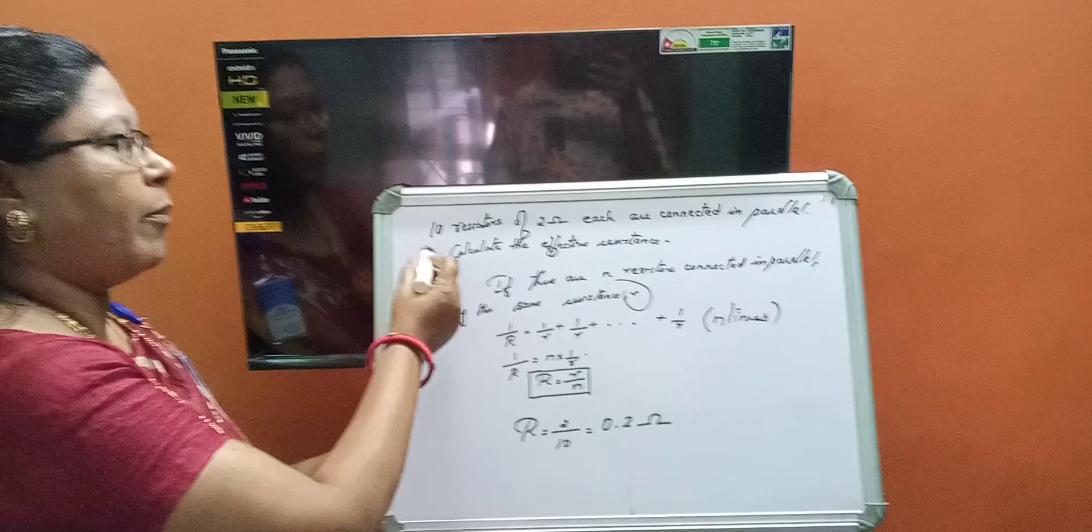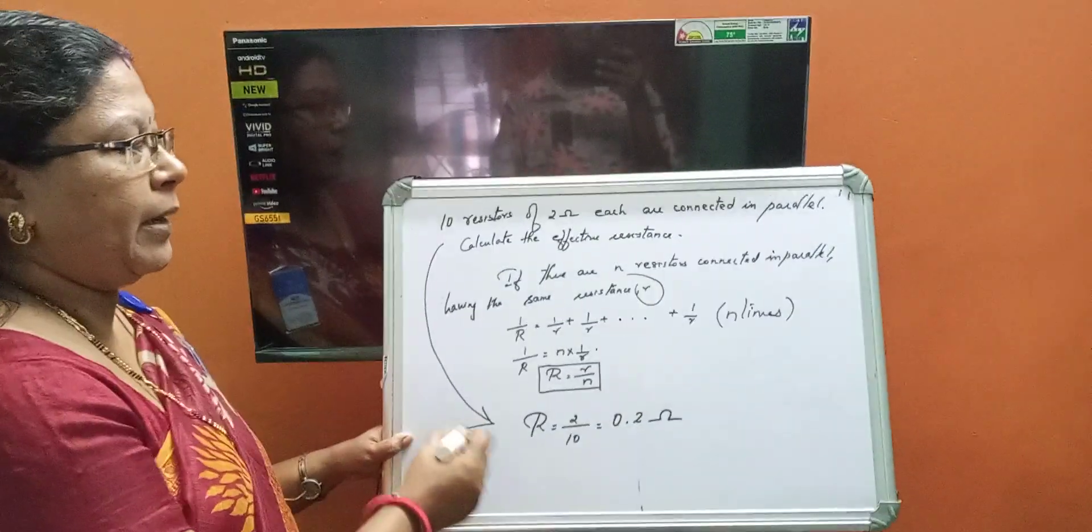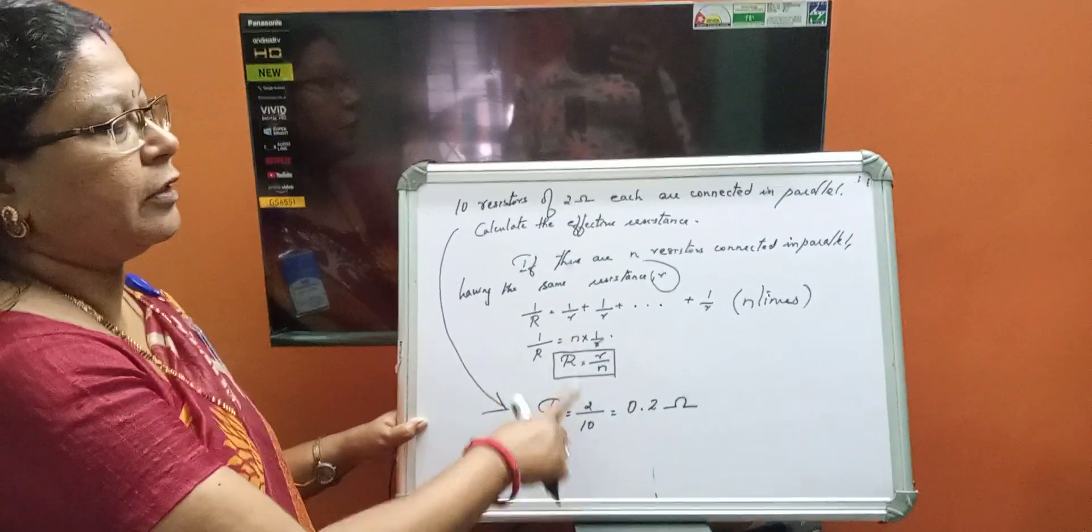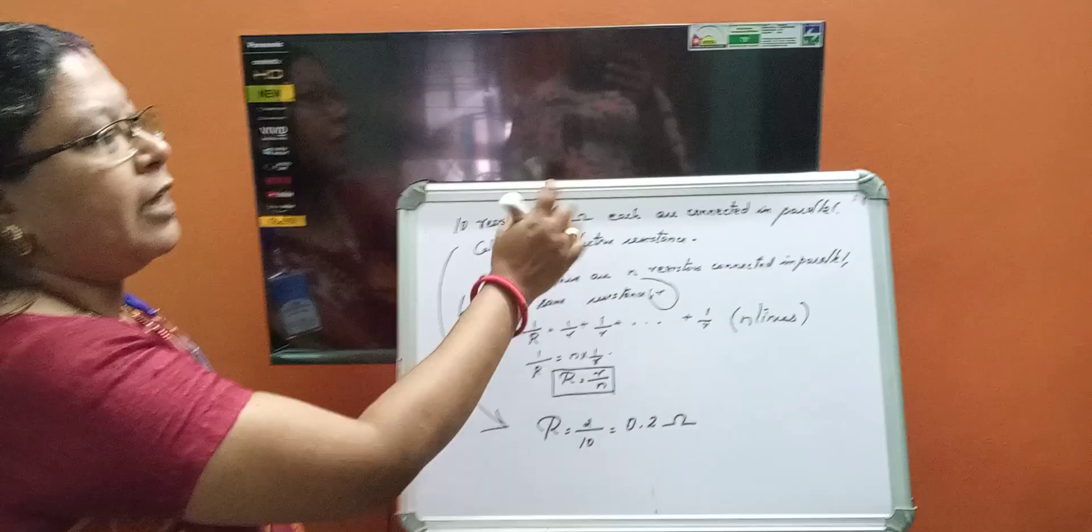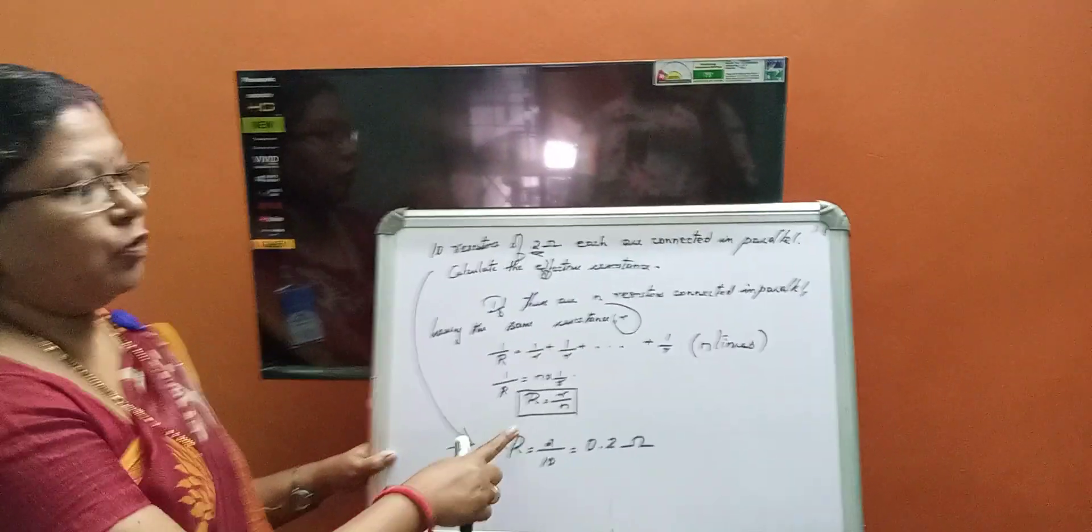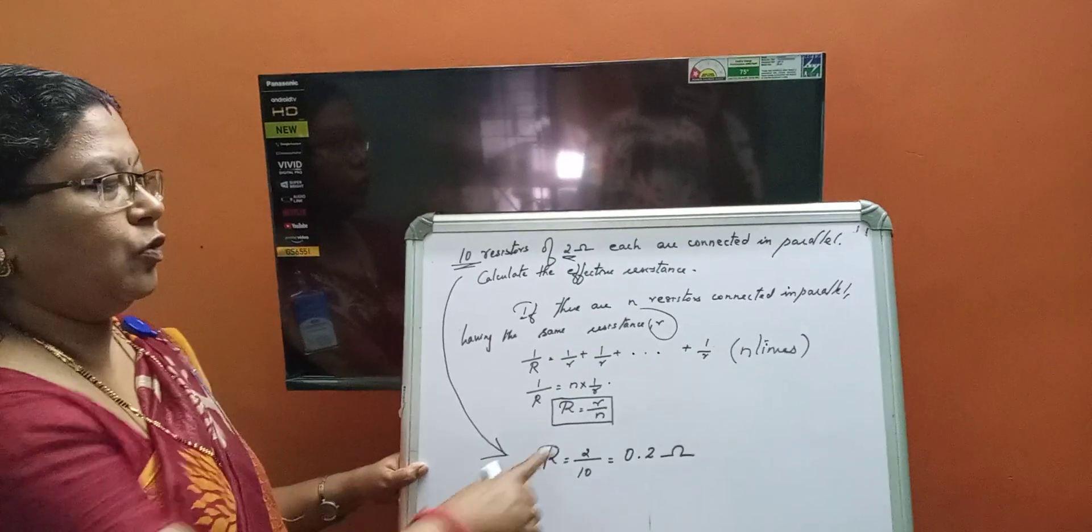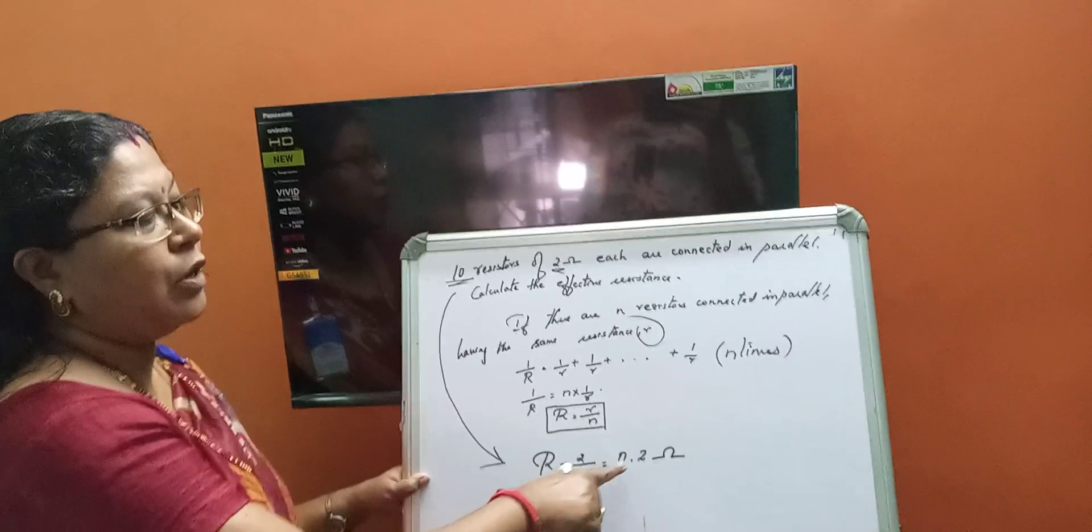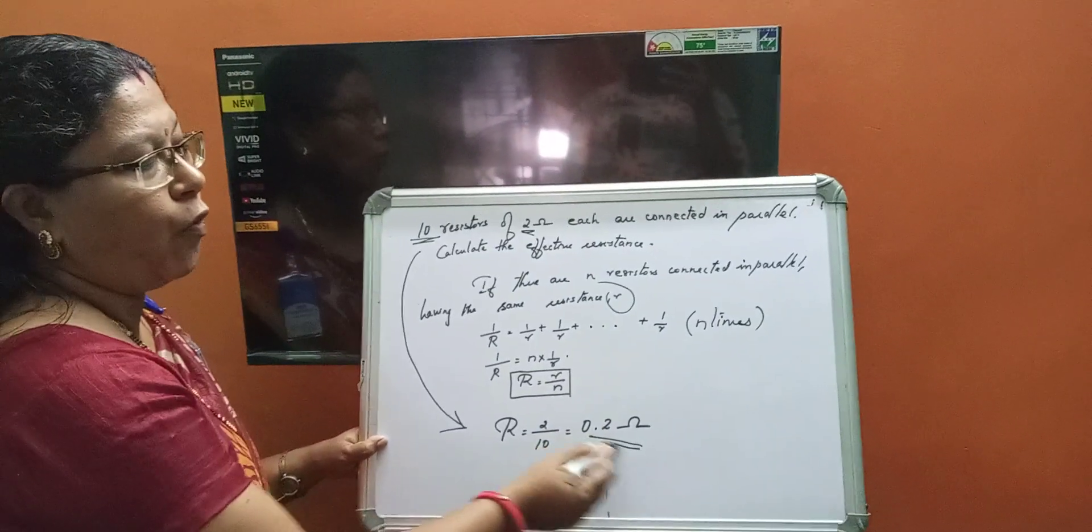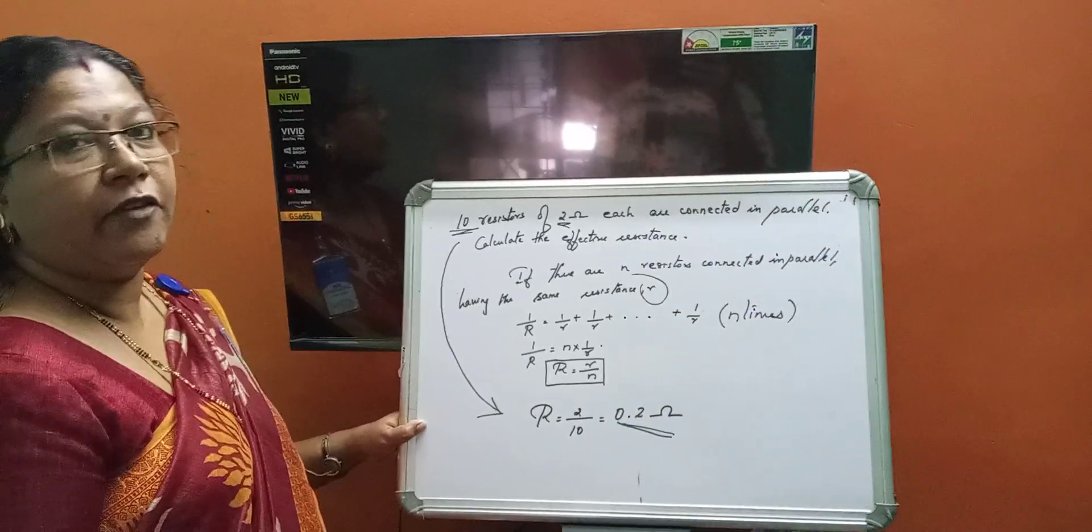So, the same formula you can apply here. What happens? Capital R is equal to small r. What is small r? Small r is 2. So, 2 divided by n. How many resistors are there? 10. So, 2 by 10. That is equal to 0.20 ohm, and this is the final answer.